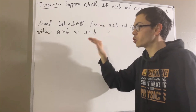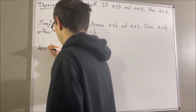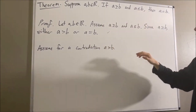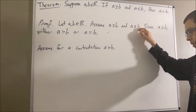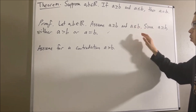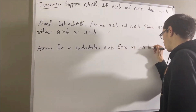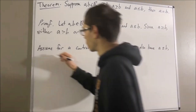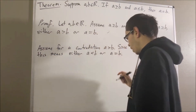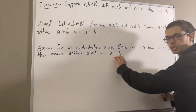So let's assume for a contradiction that A is greater than B. We also know that A is less than or equal to B, and what that means is either A is less than B or A is equal to B. We're going to show that in either case, we reach a contradiction.